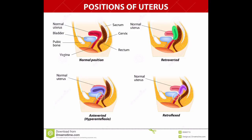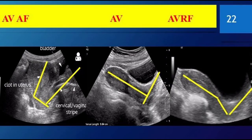The uterus is physiologically most often anteverted and anteflexed, but may also be retroflexed or retroverted. The cervix of the uterus is fixed in the midline, but the body of the uterus can be mobile and may change with varying degrees of bladder and rectal distension. Descriptions of flexion refer to the relationship of the body of the uterus to the cervix, usually about 270 degrees, whereas version refers to the cervical relationship to the vagina.